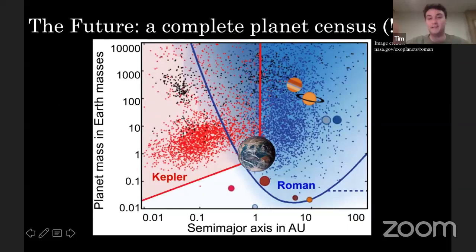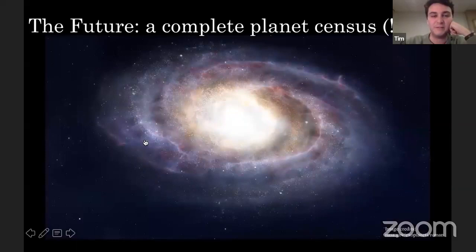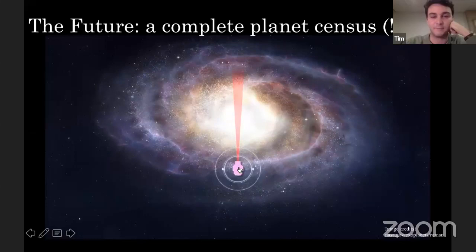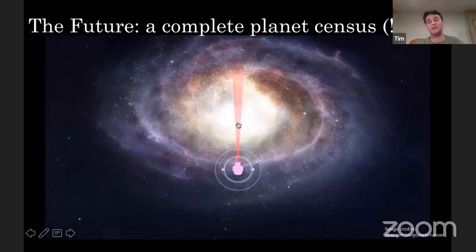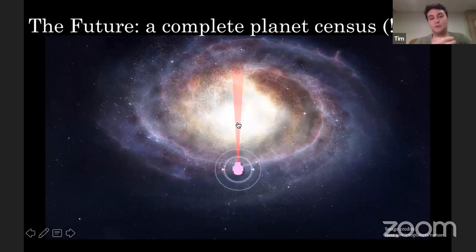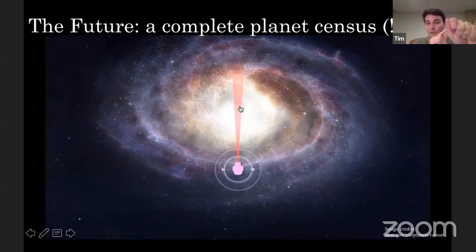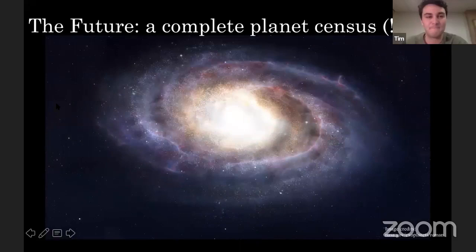Roman will look basically straight into the center of the galaxy — the bulge, where there are many, many stars — and wait for microlensing events. Instead of transiting planets, microlensing gives a much larger field of view in terms of what you can discover. Together, Roman and Kepler will hopefully cover the full planet population, giving us a complete picture of exoplanet distribution in the galaxy, maybe in 10 to 15 years when Roman starts giving us results. That's going to completely revolutionize how we think about planets.